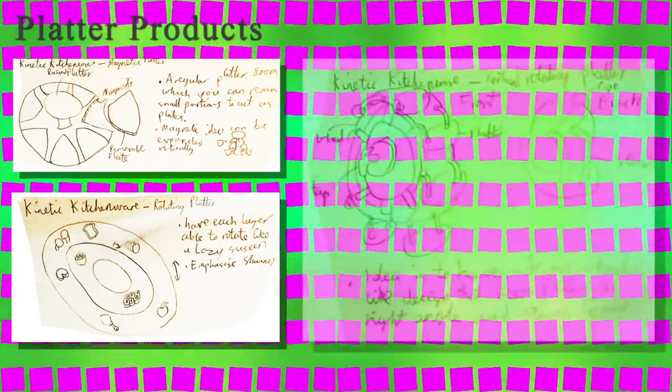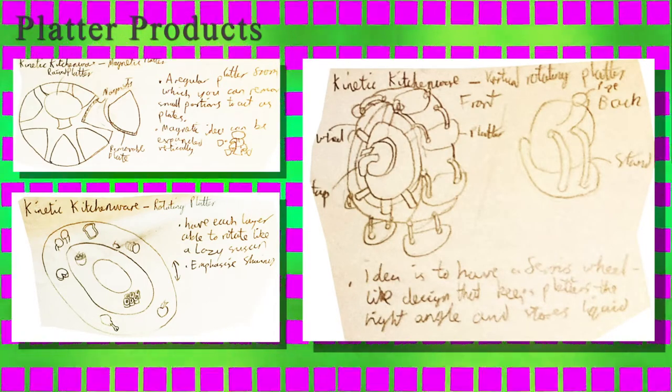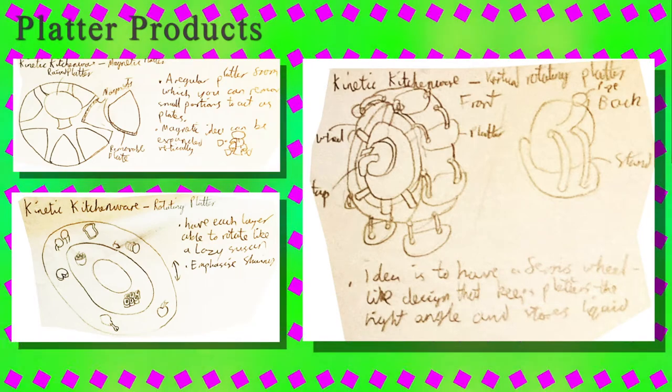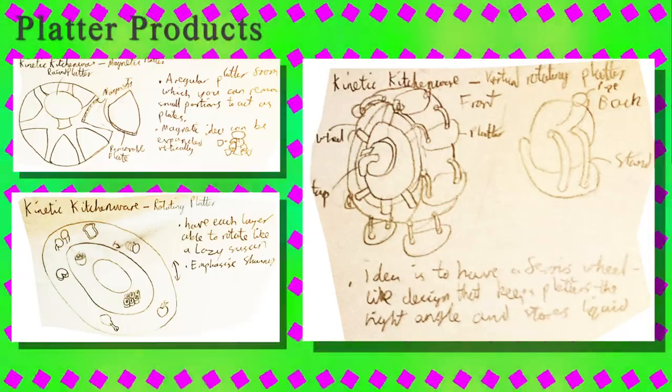Another bunch of ideas were platter-related. My first was a simple rotating platter based on a lazy Susan with different rotating layers — too simple. I moved on to a magnetic platter where small compartments could be detached, placed on your section, and put back later. But the idea I found most interesting was a vertical rotating platter, acting like a Ferris wheel with small platters for cheese, crackers, biscuits, and grapes, plus a large jug shape in the center to store water or juice — rotating to increase interactivity while also freeing up space.